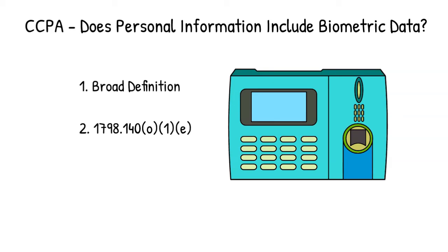And the question is, is that included in personal information? And the answer is yes. Section 1798.140, subsection O, subsection 1, subsection E, specifically says biometric data is included. So if you were collecting biometric data from California residents, then you may well need to comply with the CCPA and handle that biometric data appropriately. And if you're wondering about that graphic on the right there, that is supposed to be a biometric data security system — it was the best I could find. I don't know what it is either.